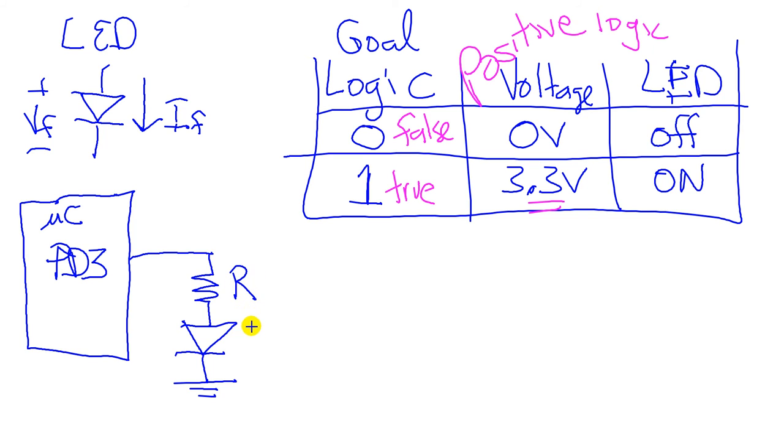We have VF there. The current that we're going to get through here is going to match the current there. There's nowhere else to go. So these are going to be the same currents, but the voltages will be different. The voltage across the resistor is different than the voltage across the diode. So let's do the two states.